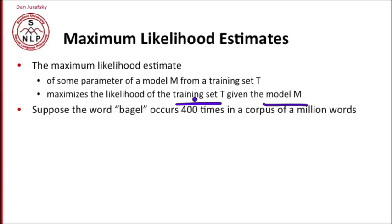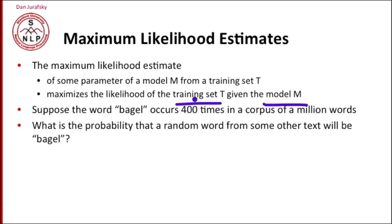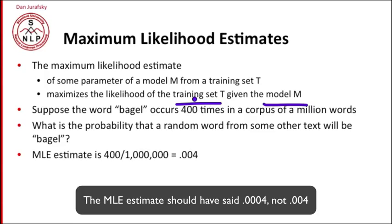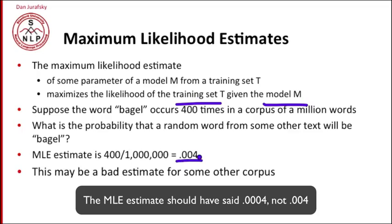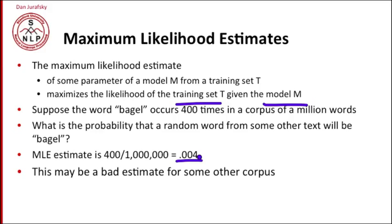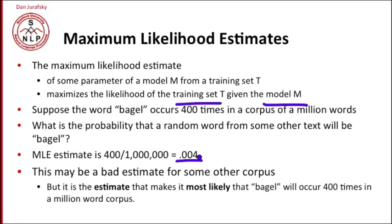Suppose the word bagel occurs 400 times in a corpus of a million words. And I ask, what's the probability that a random word from some other text will be bagel? Well, the maximum likelihood estimator from our corpus is 400 over a million, or point zero zero four. Now this could be a bad estimate for that other corpus. Who knows whether in the other corpus bagel occurs 400 times per million, or some other probability. But this estimate is the one that makes it most likely that bagel will occur 400 times in a million word corpus, which is what it did occur in our training corpus. So we're maximizing the likelihood of our training data.